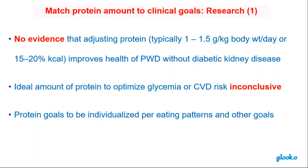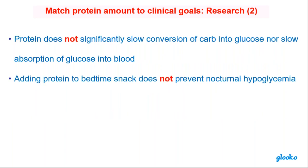What about protein? There's no evidence that adjusting protein is going to improve health for patients without diabetic kidney disease. There's no ideal amount of protein — the jury is still out. So protein goals have to be individualized. Fifteen to 20% of calories is pretty much average.